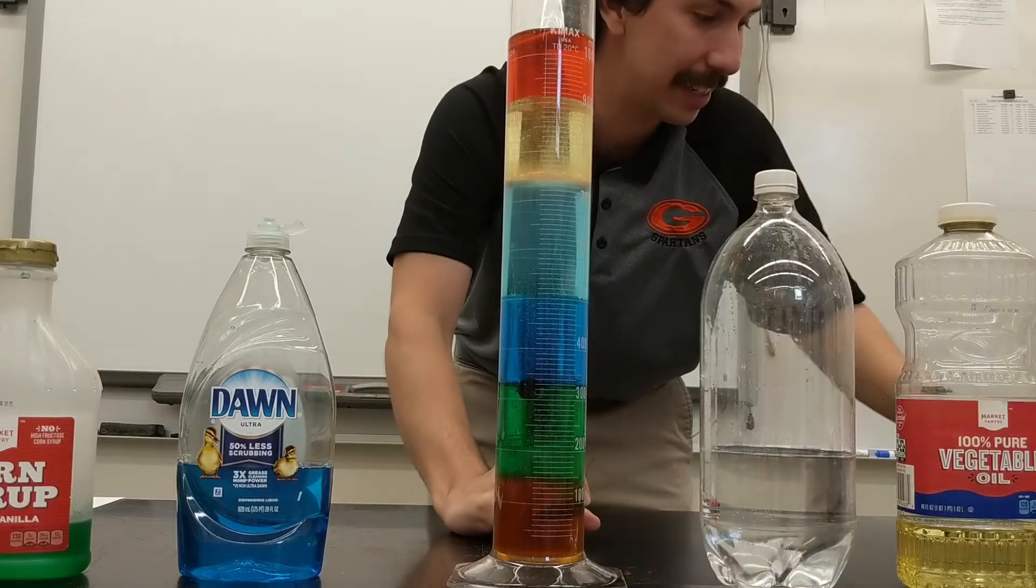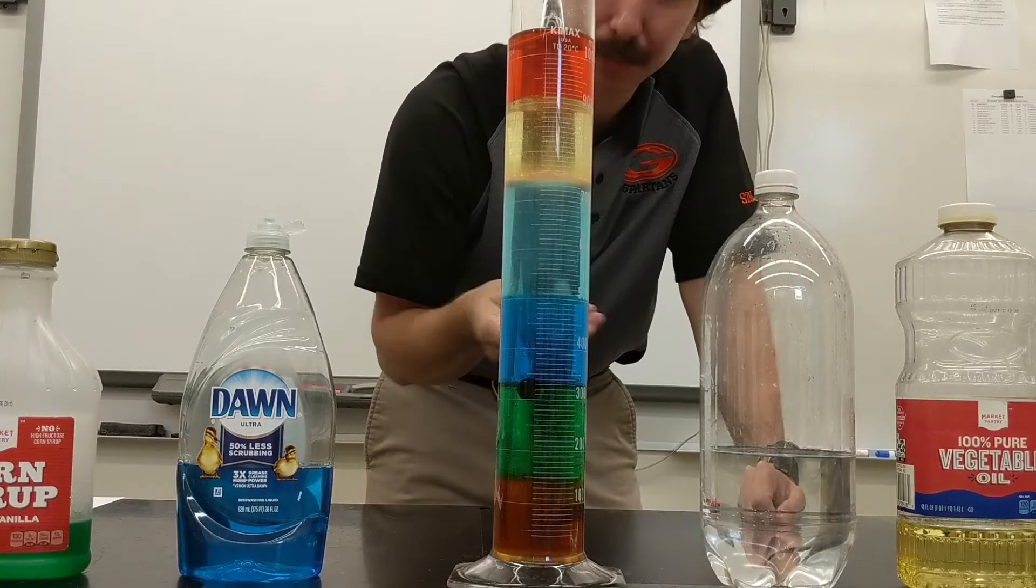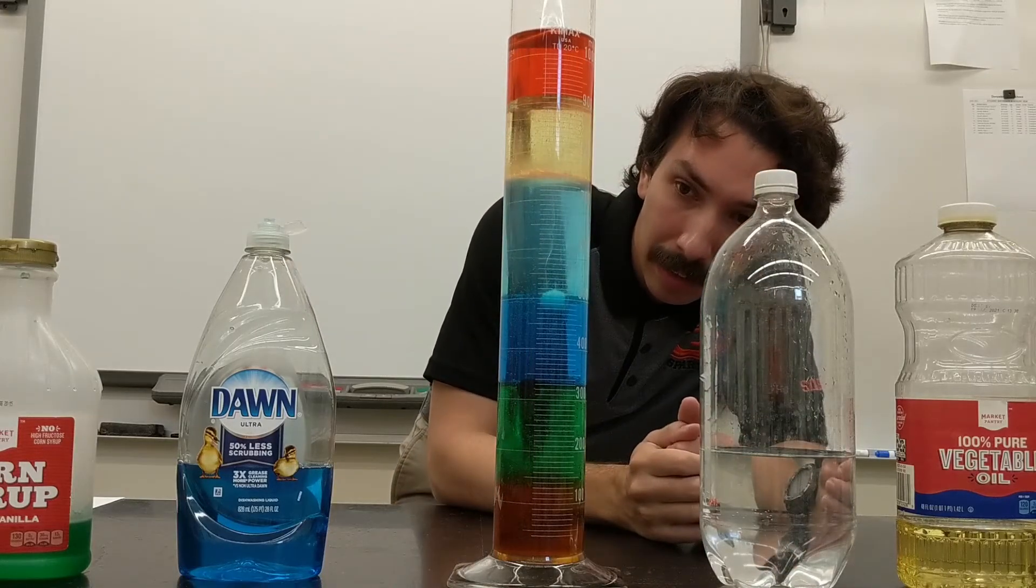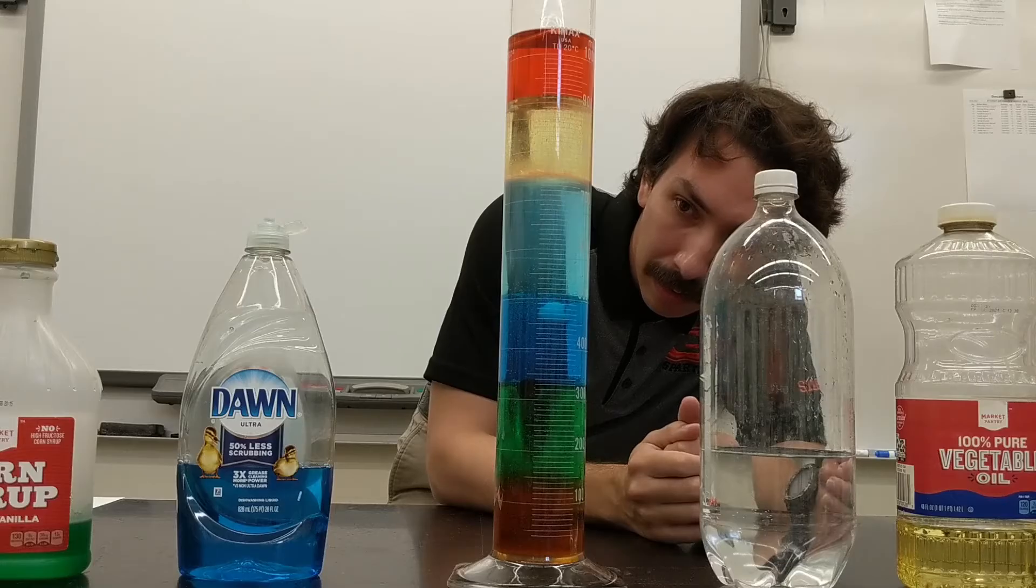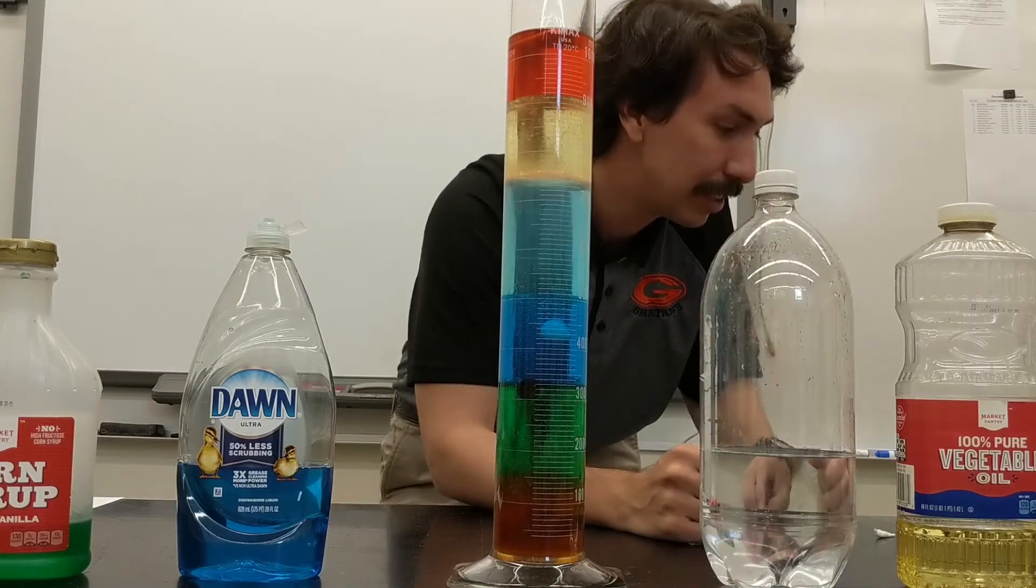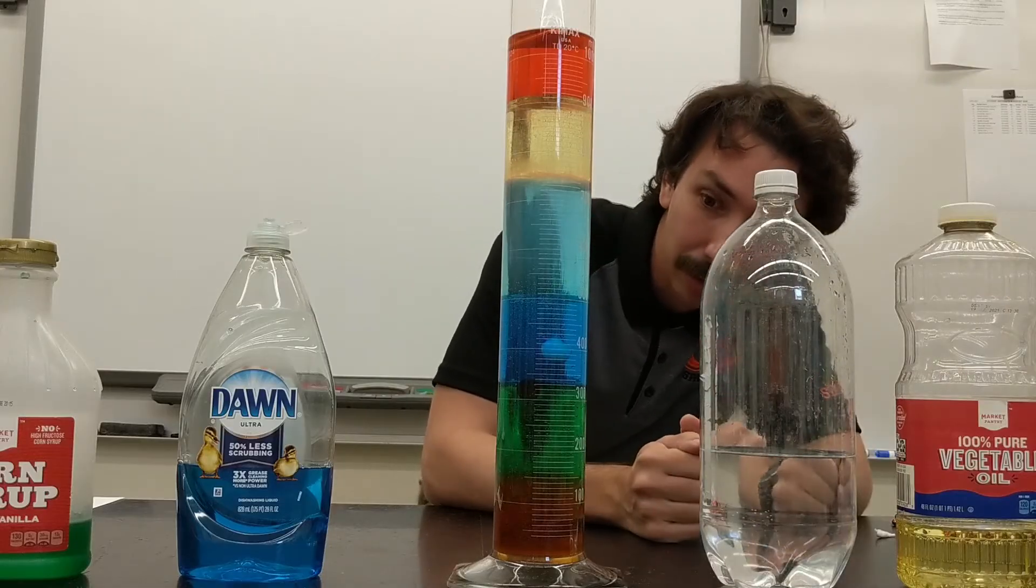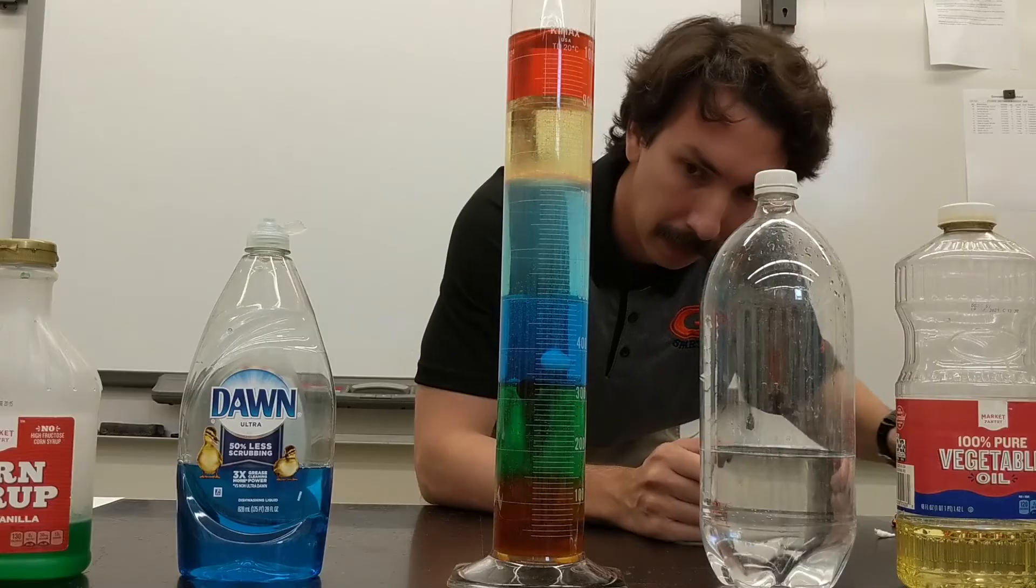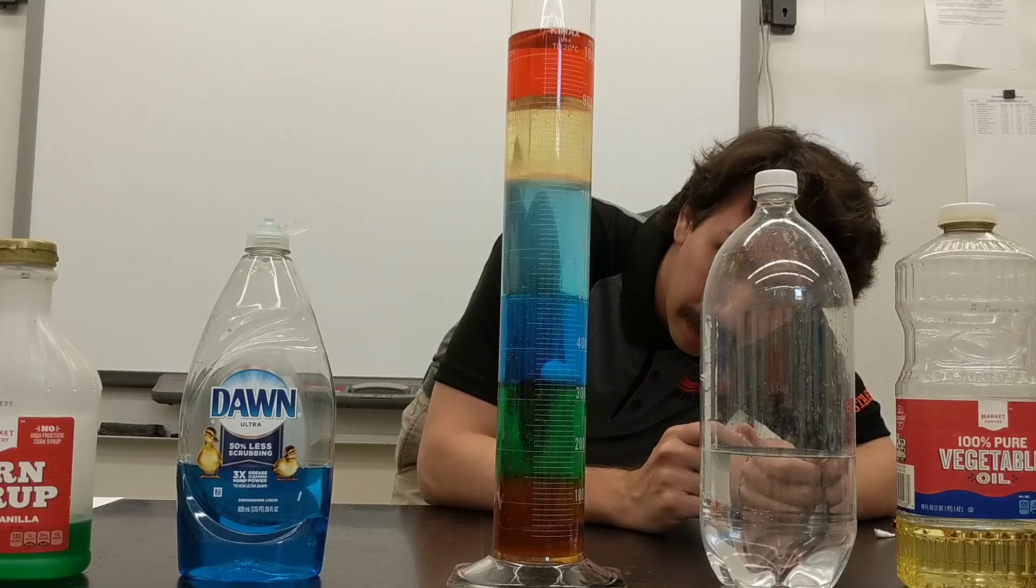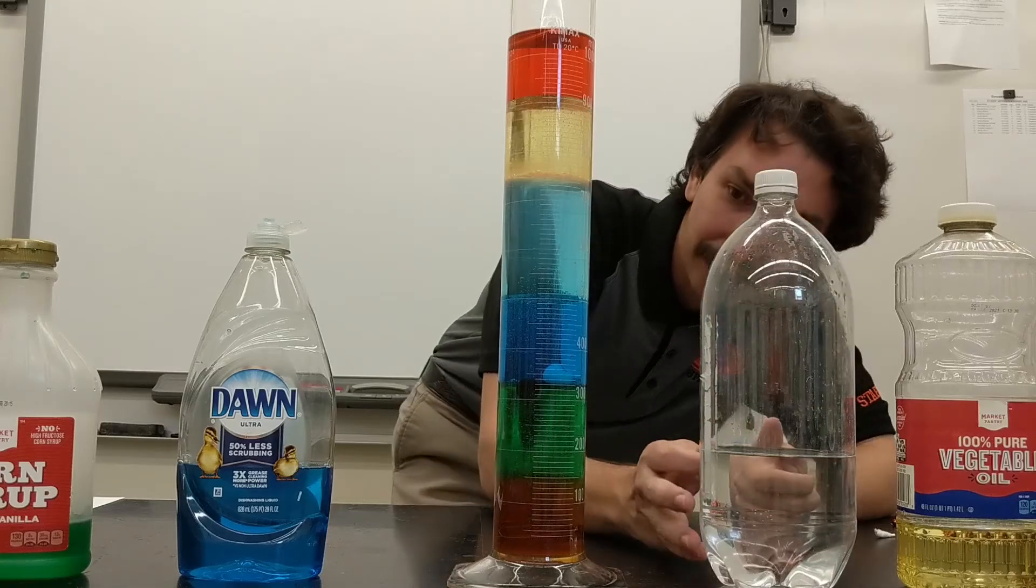And you can see the eraser is still going through that honey. So the eraser is more dense than the honey because it's keeping on falling through. I got just a white plastic ball. Sounds like it might be hollow. And it went straight through the water and it looks like it's falling through the soap. So it is more dense than the soap. Let's see what happens when it hits the corn syrup.